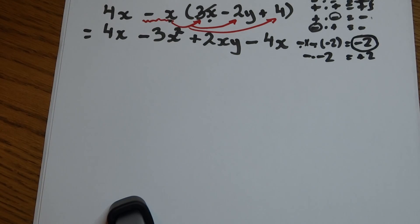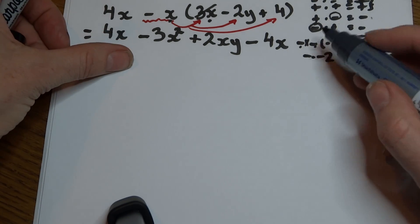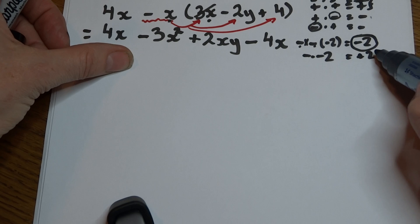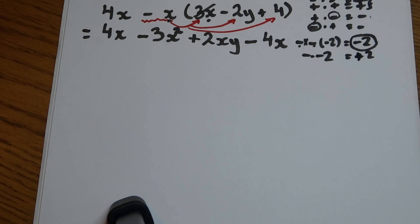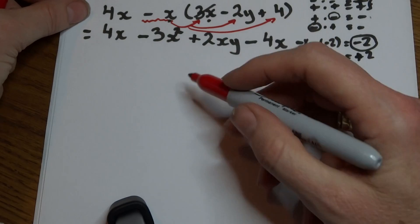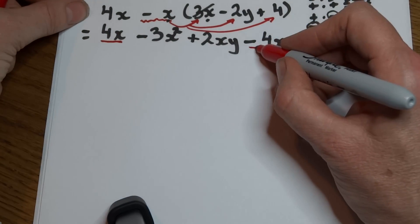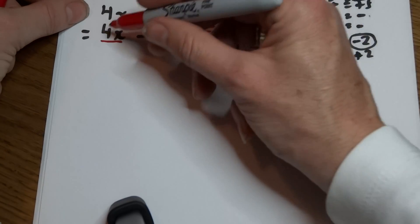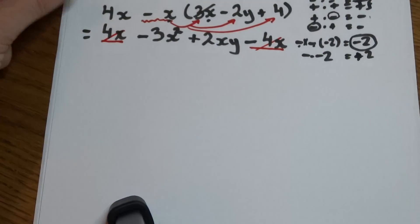An odd number of minus signs multiplied or divided by one another is always going to give us a negative number, and an even number of minus signs will always give us a positive number. Now we have this expression and we need to see if we can simplify it. We notice that here we have plus 4x and here we have minus 4x. 4x minus 4x is just going to give us 0, so that expression disappears.